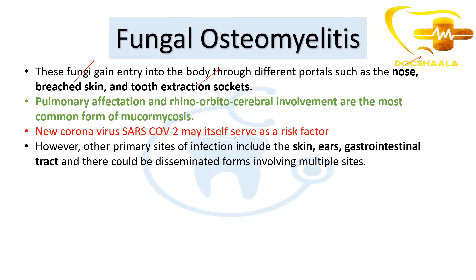Pulmonary affectation and rhinoorbito-cerebral involvement are the most common forms of mucormycosis. Recently, SARS-CoV-2 is also a risk factor in developing fungal osteomyelitis — this is essentially the black fungus cases we saw enormously during COVID infection. Other primary sites of infection include skin, ears, and the gastrointestinal tract.